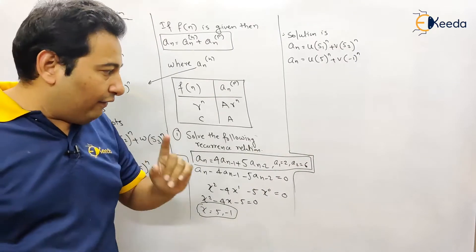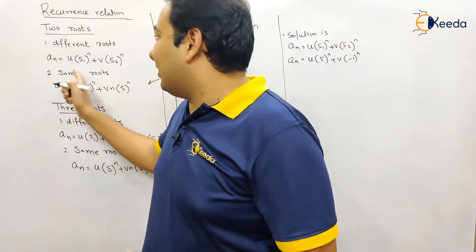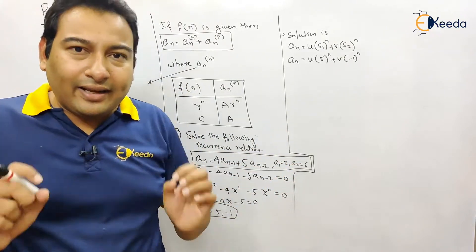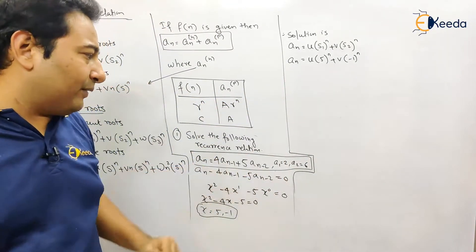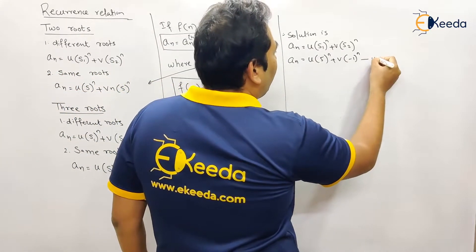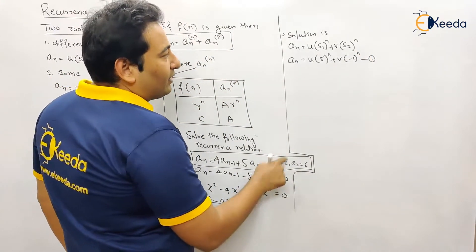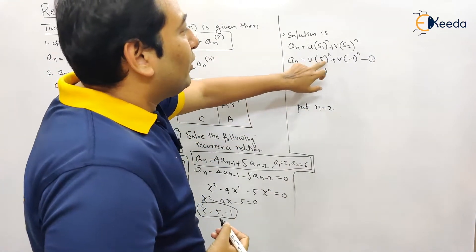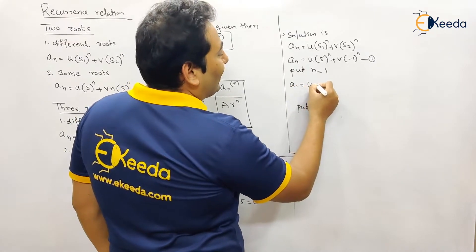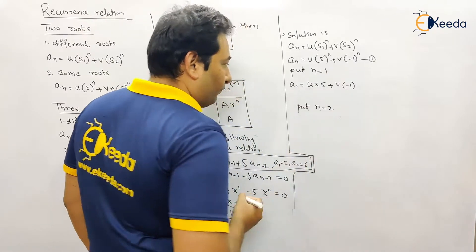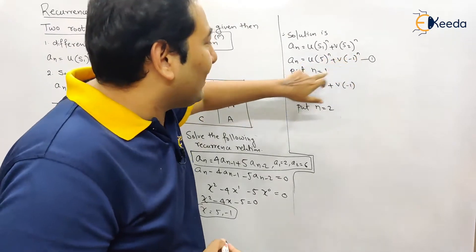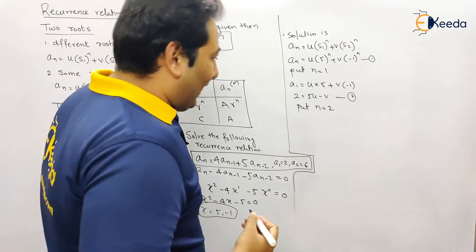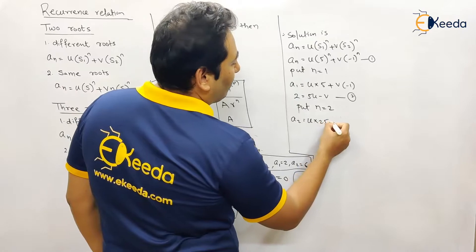If initial conditions are not given, we are done with the problem. But if initial conditions are given — and they may or may not be given — we need to find u and v. Since a1 and a2 are given, we substitute n = 1 and n = 2 into the solution. Putting n = 1: a1 = u·5 + v·(-1), and since a1 = 2, we get: 5u - v = 2. This is equation 1.